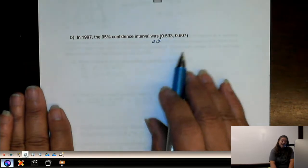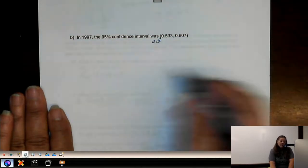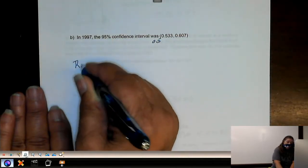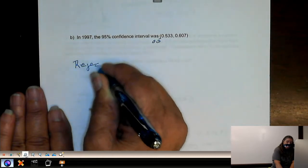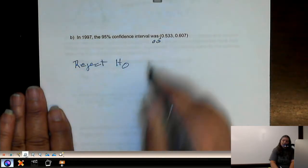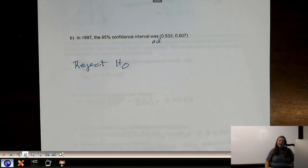which means it's not a plausible value. So in this case, we reject the null hypothesis because 0.5 is not plausible.